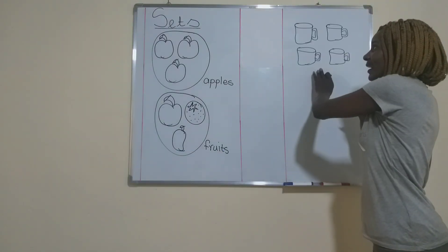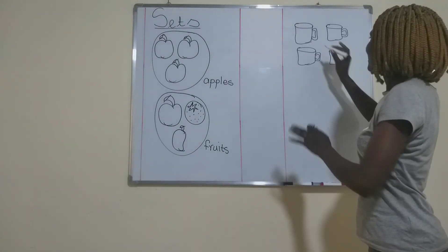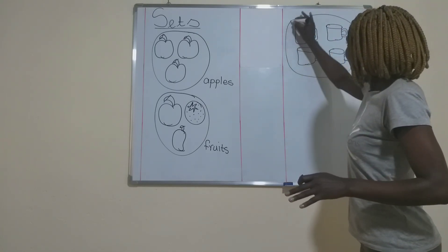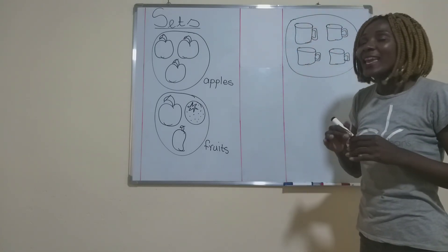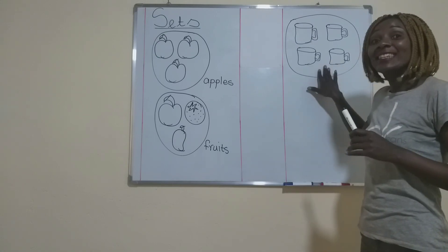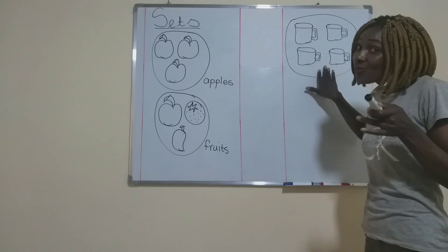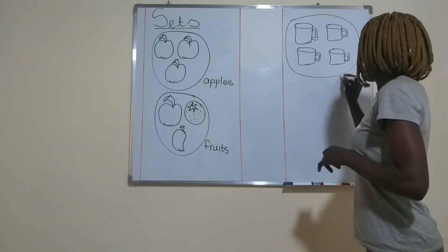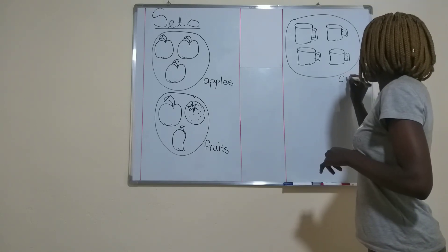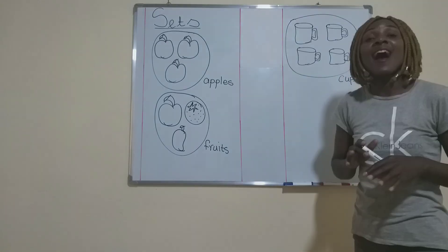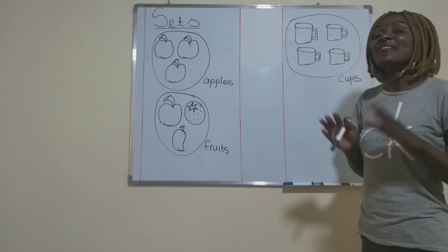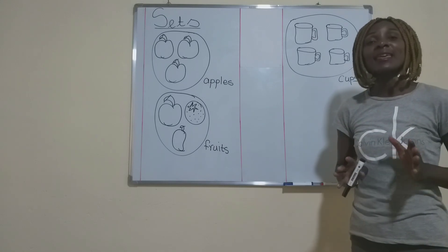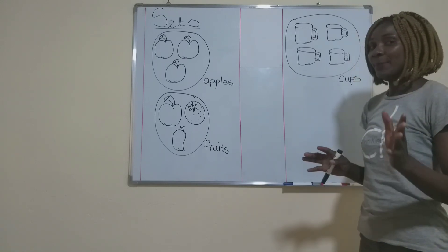Now here are some more other things. We put them together. We are going to say this is a set of cups. So cups — there are cups and they make a set. So that is why we are saying a set of cups.